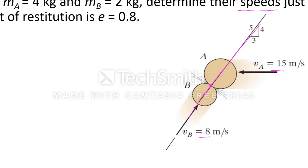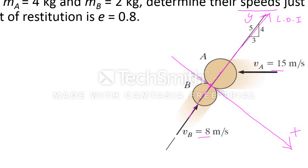This is the line of impact. The normal to this line is called the plane of contact. Let me call this normal the x-axis and the line of impact the y-axis, with these as the positive directions.